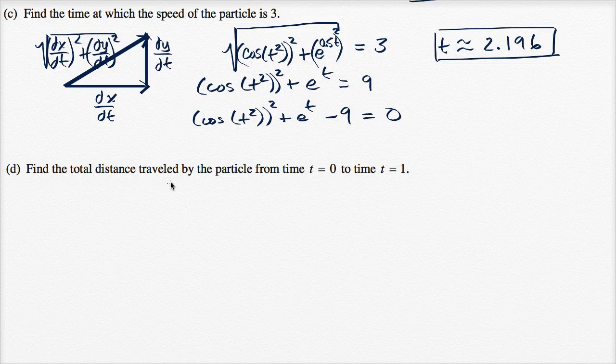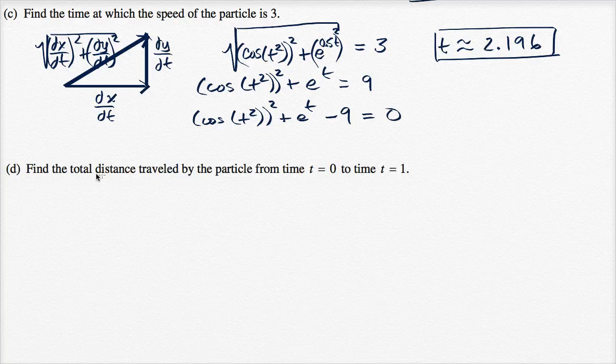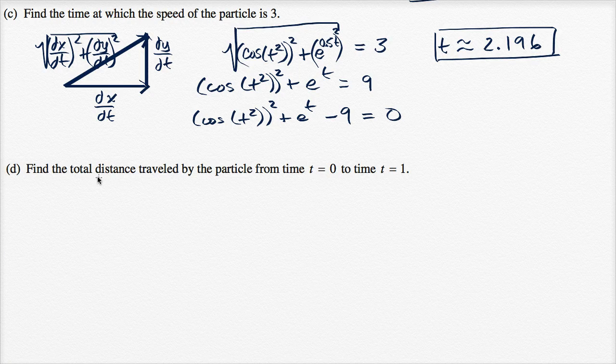Find the total distance traveled by the particle from time t equals zero to t equals one. Now let's remember, they didn't say find the total displacement, they said find the total distance traveled by the particle.